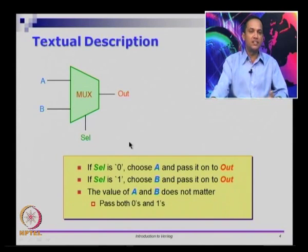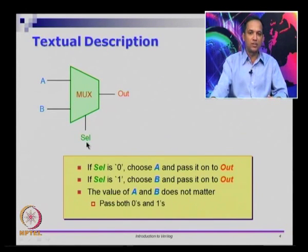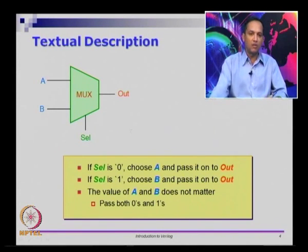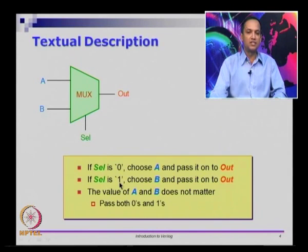Now I can write the description for this in English. We can say that if select is 0 — select is just a one-bit control input that can take two values, 0 or 1 — if select is 0, then choose a and pass it to output. If select is 1, choose b and pass it to output. This is an English description of this design problem: I want one of a or b to be passed on to output at a time.